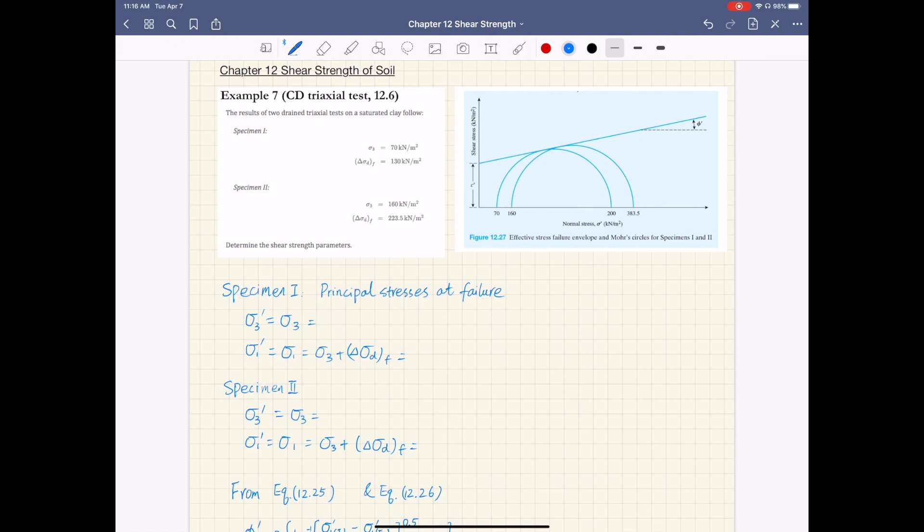You are given results of two drained triaxial tests on a saturated clay. So you are given sigma 3, which is the minor principal stress, and also the chamber pressure...